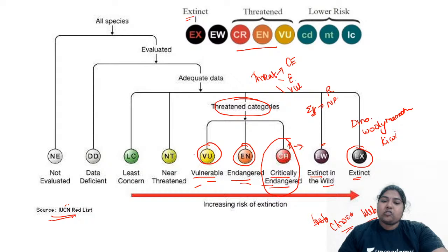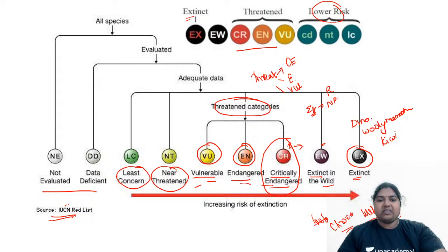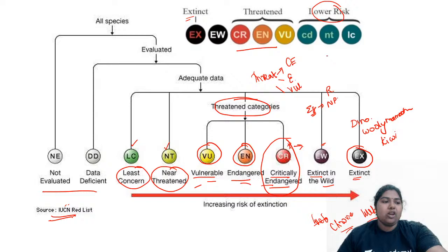The next category is at lower risk. This includes near threatened and least concerned. Also included are data deficient and not evaluated categories. These are all coming under the lower risk category. It mainly includes LC (Least Concerned) and NT (Near Threatened), plus cases where data is not yet evaluated.